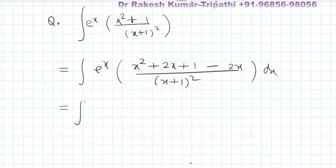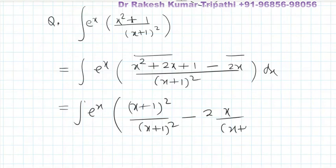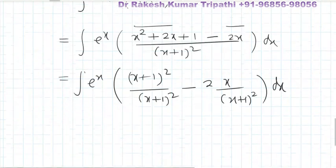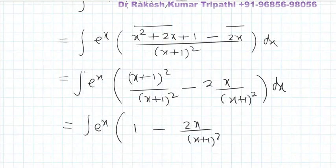If we separate the bracket into two parts, it becomes: the first part (x plus 1) whole square over (x plus 1) whole square, minus 2x over (x plus 1) whole square dx. The (x plus 1) whole square terms cancel, so the outcome is e to the power x times (1 minus 2x upon (x plus 1) whole square) dx.